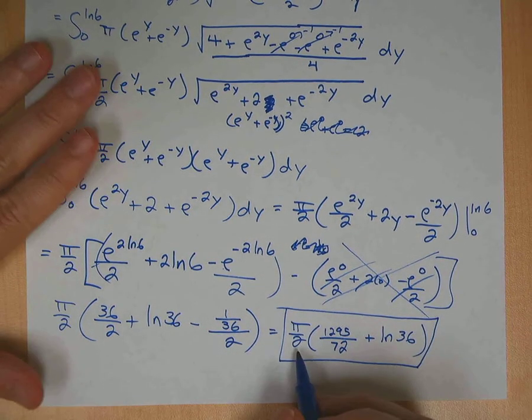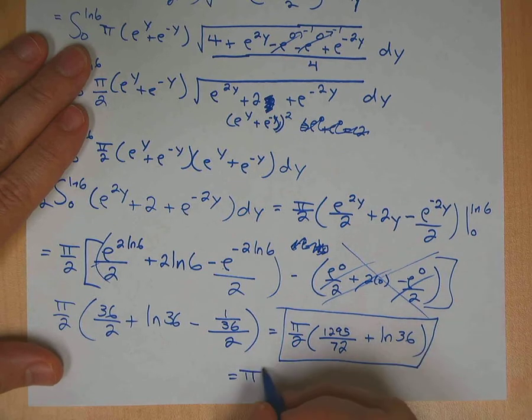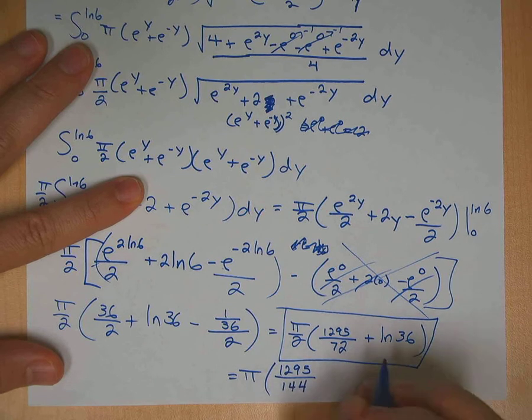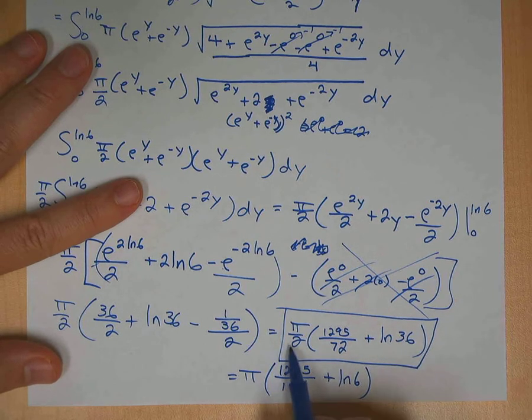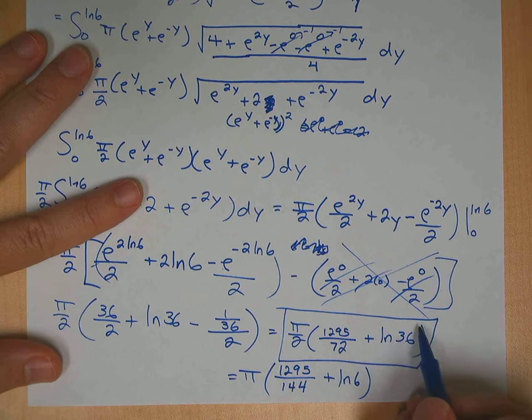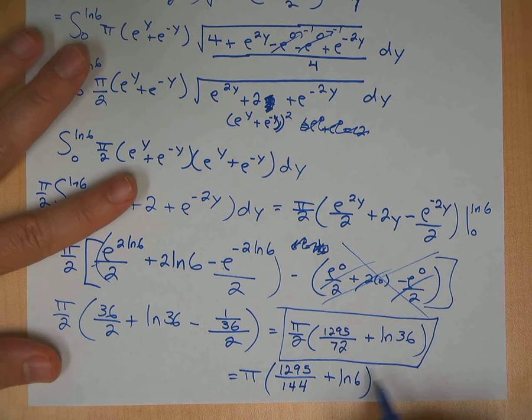If you want to take it one step further, you could distribute the 2 out here. If you did distribute the 2, keep the π out front, you get 1295 over 144 plus ln 6. Now the ln 6 comes from—if you brought a half in here, the half would be in front of the ln 36. You bring a half up to the 36, anything to the half power is actually a square root. So when you distribute the half here and bring it up here to the exponent, it would be a square root of 36, which is where the 6 is coming from. And that's it.